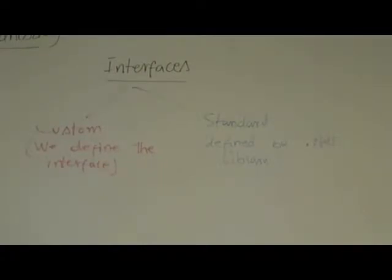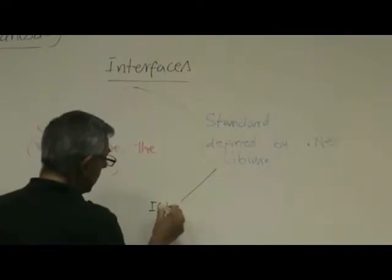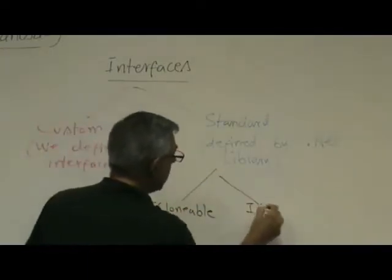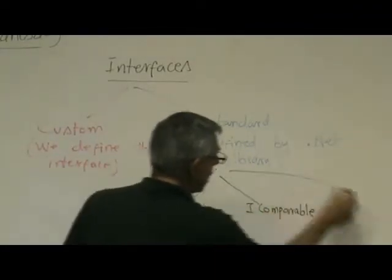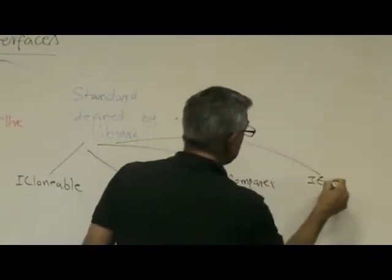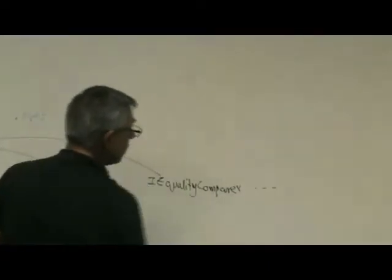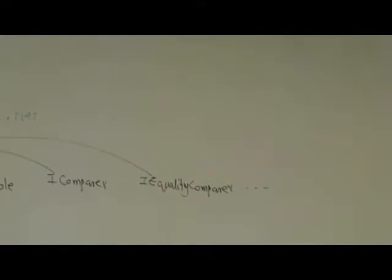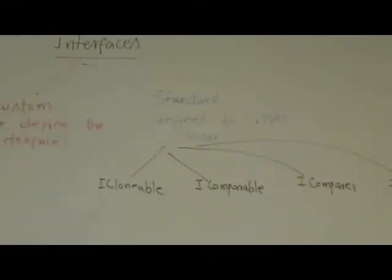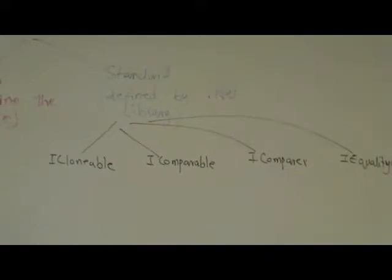So there are a few, for example, popular interfaces that, in my opinion, every programmer should feel comfortable using them, implementing them. Okay. So some of the popular interfaces are ICloneable, IComparable, IComparable, IComparer, okay, IEqualityComparer, okay, and as time permits, we can take a look at some other interfaces. But at least the first three of these, everybody should feel very, very comfortable. How do we program them? How do we use them? Okay. What's the purpose of these interfaces?